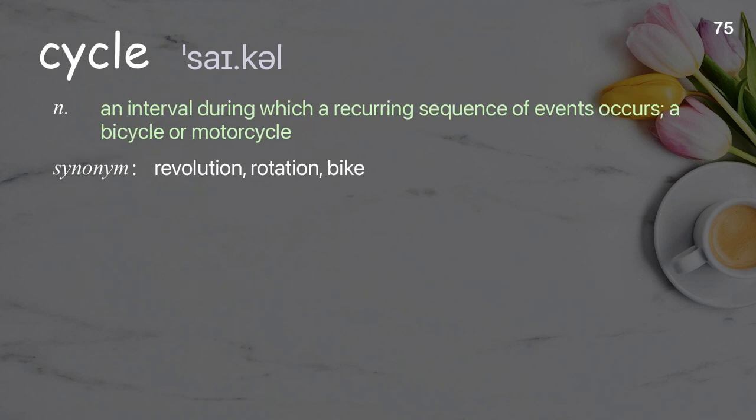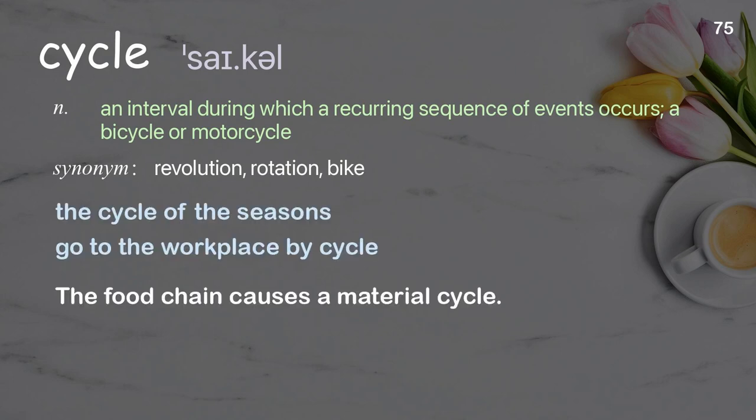Cycle: An interval during which a recurring sequence of events occurs; also a bicycle or motorcycle. Examples: The cycle of the seasons. Go to the workplace by cycle. The food chain causes a material cycle.